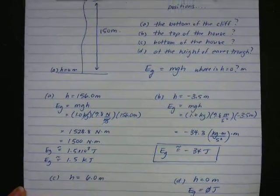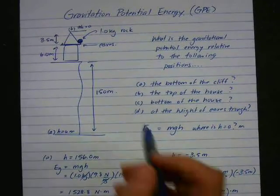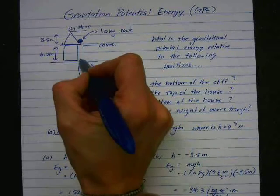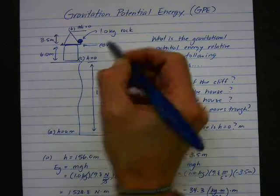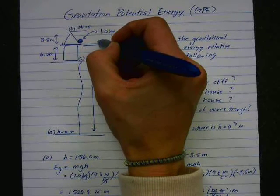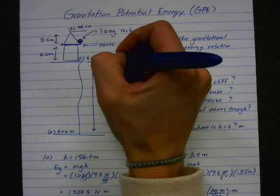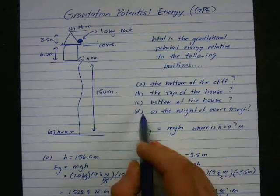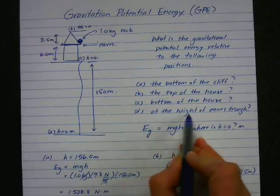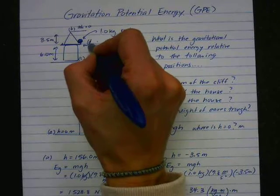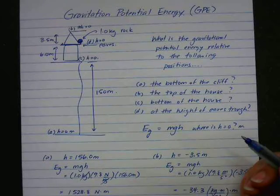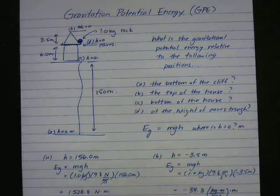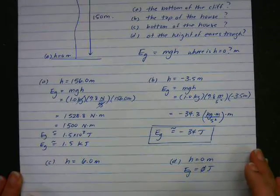I'm going to go back up to the picture. So for C, bottom of the house, we're saying that h is equal to 0 here. The rock is located 6 meters above. So the height of the rock is 6 meters. And for D, at the height of the eaves trough, D is saying this is h equal to 0. The rock's height is 0 and therefore has no potential energy relative to the eaves.